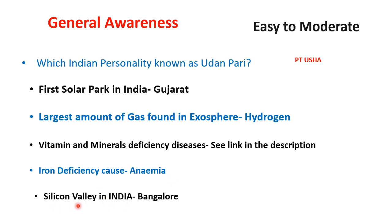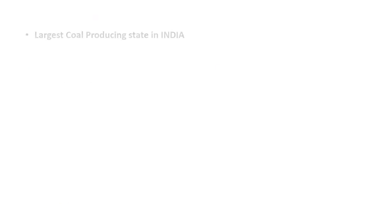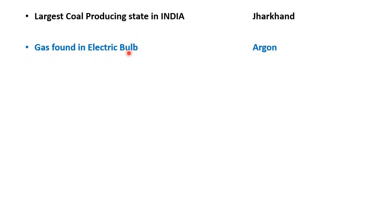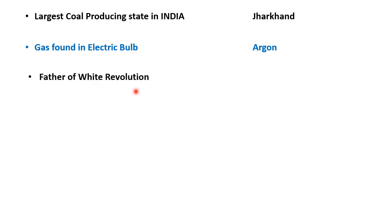Silicon Valley in India — India में Silicon Valley किसे कहा जाता है? Bangalore. Silicon एक बहुत अच्छा semiconductor है — यह solar cell panels में use होता है। Largest coal producing state in India — India का सबसे ज़्यादा coal producing state कौन सा है? Jharkhand. Gas found in electric bulb — argon gas है जो electric bulbs में मिलती है।